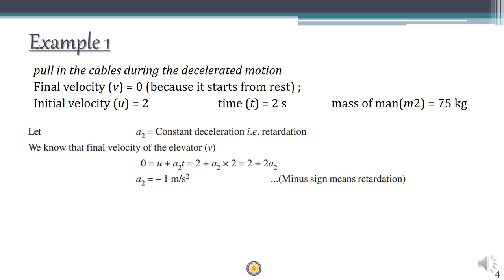Now let's see the second case. The lift comes to rest with constant deceleration. Final velocity is 0, initial velocity is 2 m/s, and the time taken for stopping is 2 seconds. The deceleration rate is not given, so we use V = U + a·T to find it. The deceleration is denoted A2.